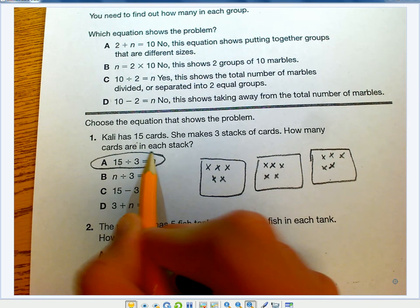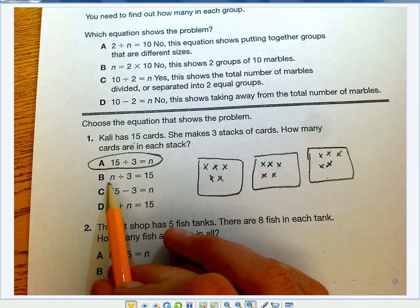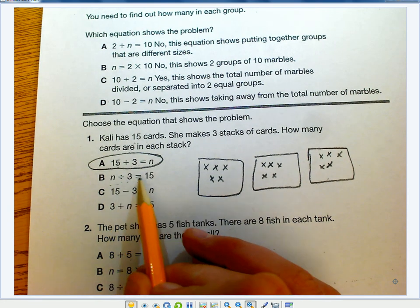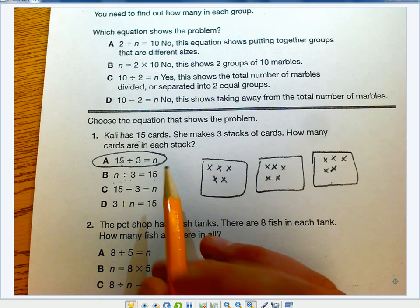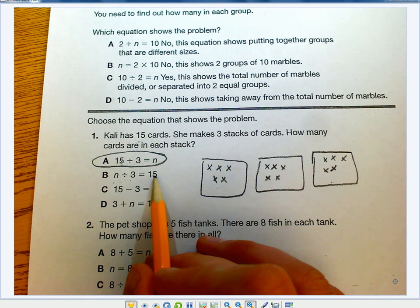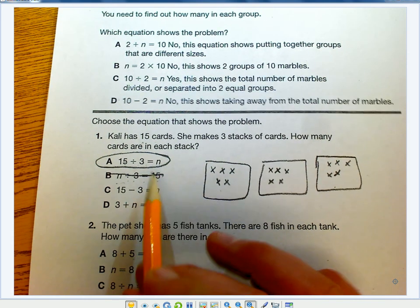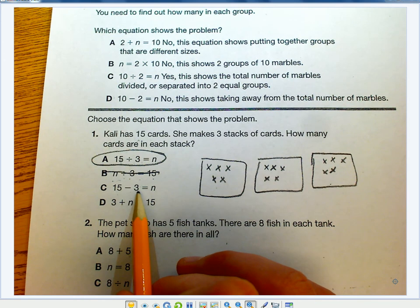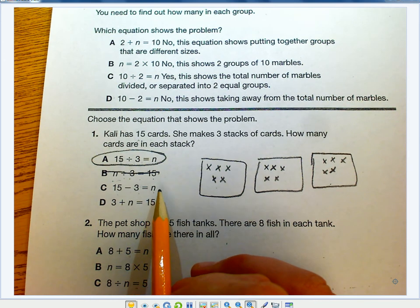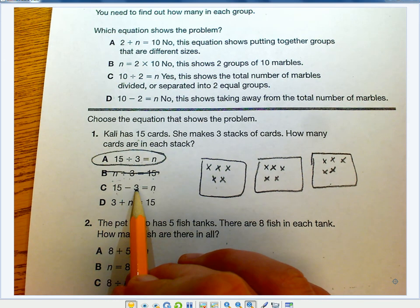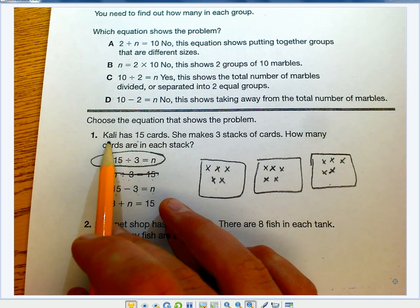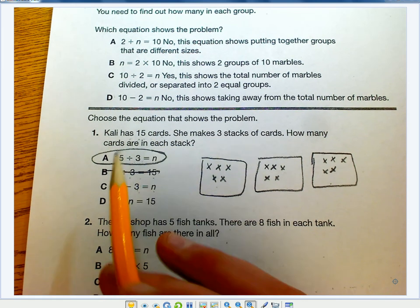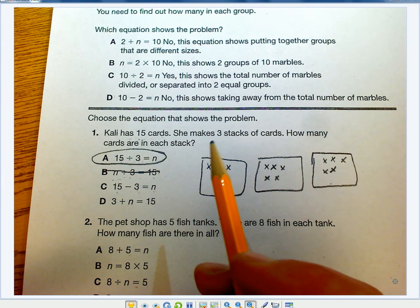But I'm going to go ahead and look at my other options just in case. n divided by 3 equals 15. Now I know my answer isn't 15, my answer is 5, so I can cross that one out. Then 15 minus 3, well n is my unknown, but if I have 15 and I take away three cards, that question would read something like, Callie has 15 cards and loses three cards, how many does she have left?